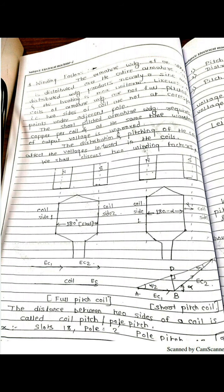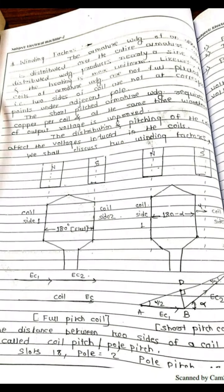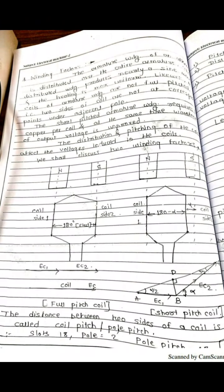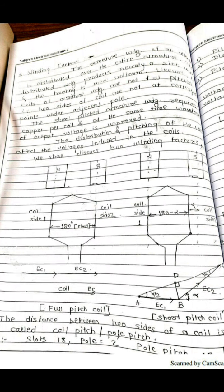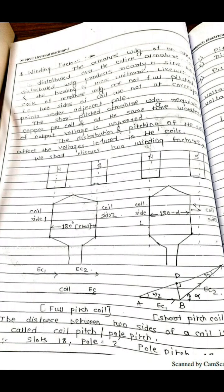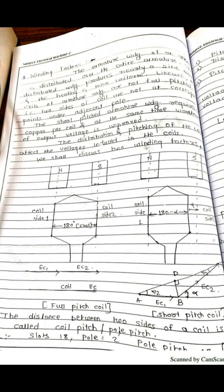The armature winding of an alternator is distributed over the entire armature, so it will produce a nearly sinusoidal output waveform. But sometimes this sinusoidal waveform is disturbed due to the presence of a short pitch coil. So for understanding that, we should know the fundamental principle of what is meant by a short pitch coil and what is meant by a full pitch coil.